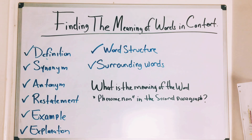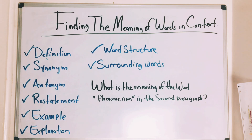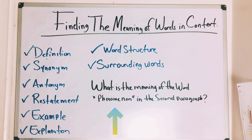When finding the meaning of words in context, you don't want to rely on your own definition of the word. Think about what the author is trying to say, because in the English language one word can have multiple meanings. Use context clues — look at the words before and after the underlined word. You might be given a problem like: 'What is the meaning of the word phenomenon in the second paragraph?' They will underline the word and ask what it means.